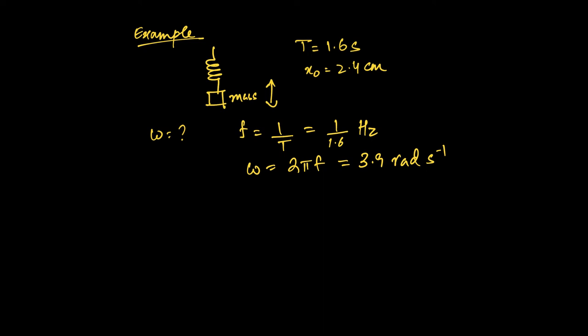If you work all of that out, your angular frequency—remember it's in radians, radians per second—if you don't know why it's in radians, please refer back to the videos on circular motion. And then you have the question: what's the maximum speed that this mass is oscillating at? Well, v max is at x equals zero, which equals omega x naught, which equals 3.9 times 2.4, and that gives us 9.4 centimeters per second.